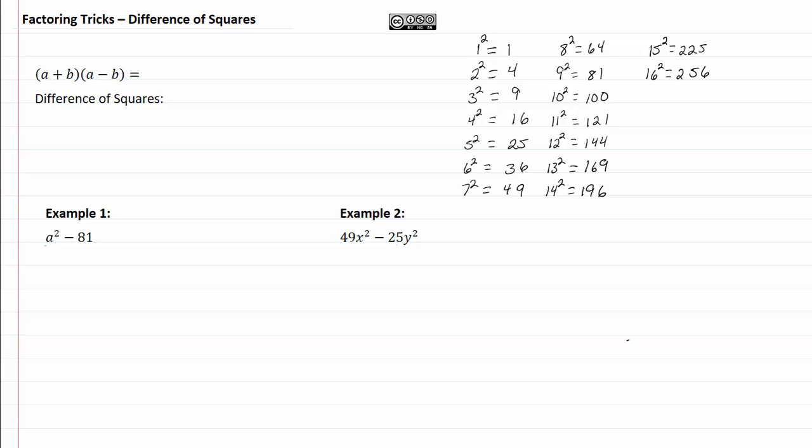Factoring tricks, difference of squares. You may recall that when we had two binomials multiplied times each other, and they were identical except for the signs, then we got a squared minus b squared, which is a difference of squares.